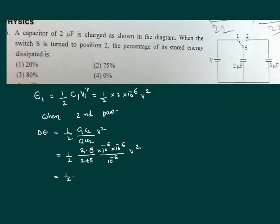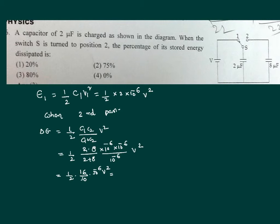We can identify this value as half 16 into 10 power minus 6 V square. Then its value is 16 by 20 into 10 power minus 6 V square, that is 4 by 5 into 10 power minus 6 V square. That equals loss of energy is 0.8 into 10 power minus 6 V square.